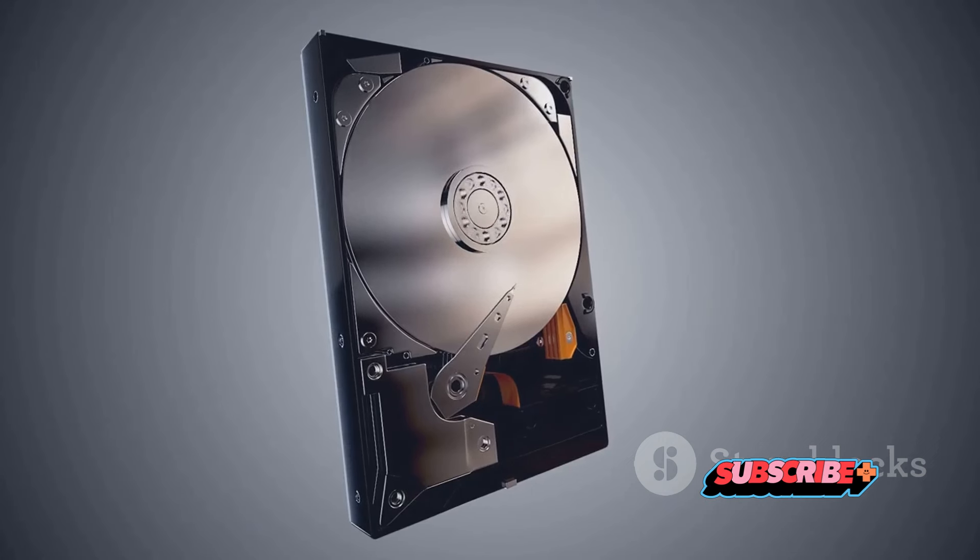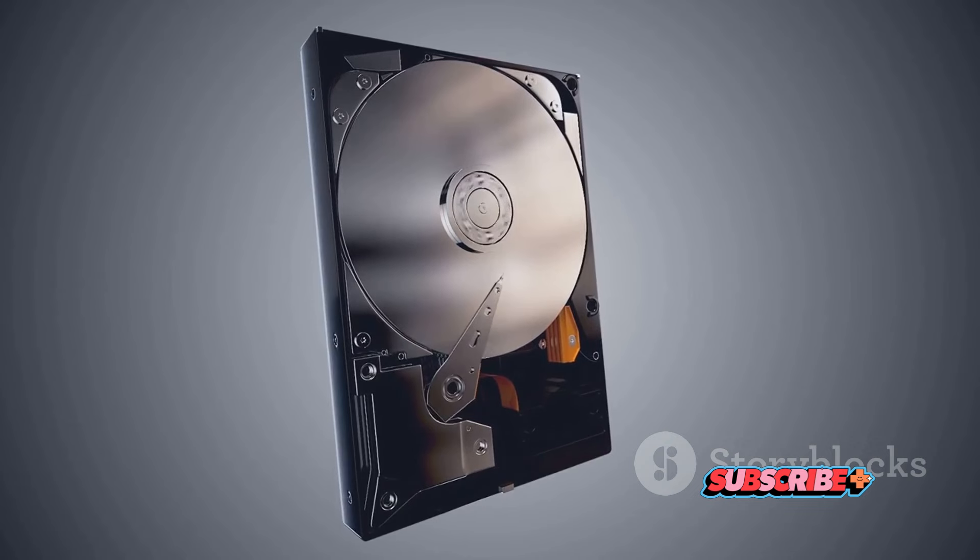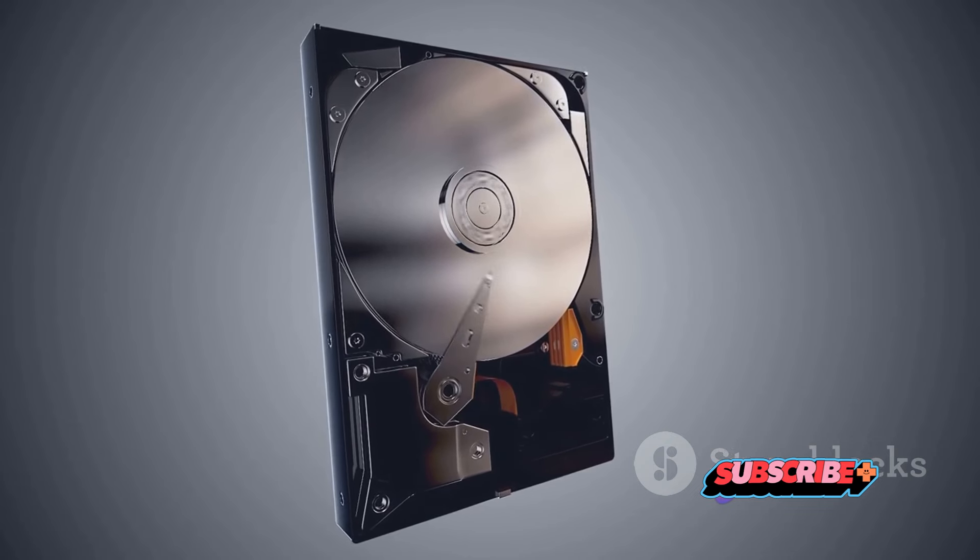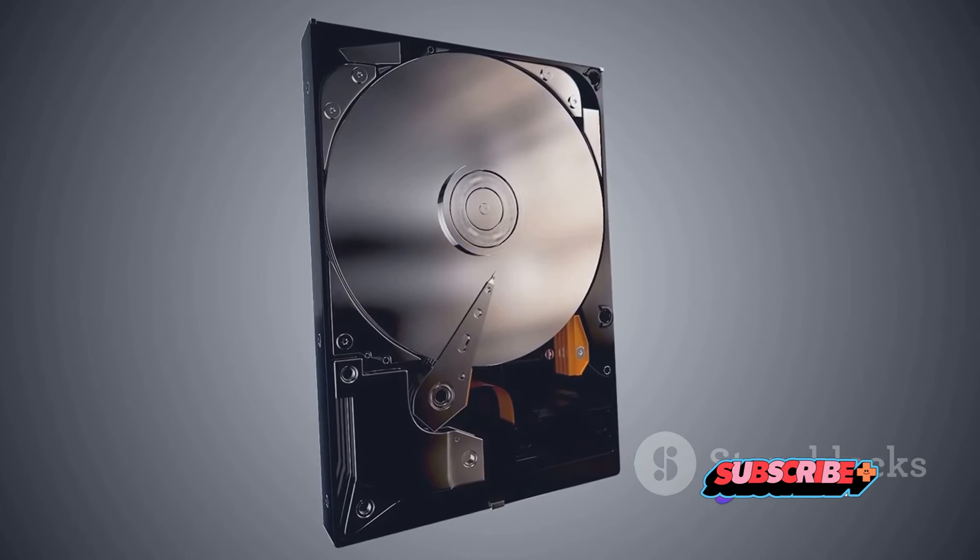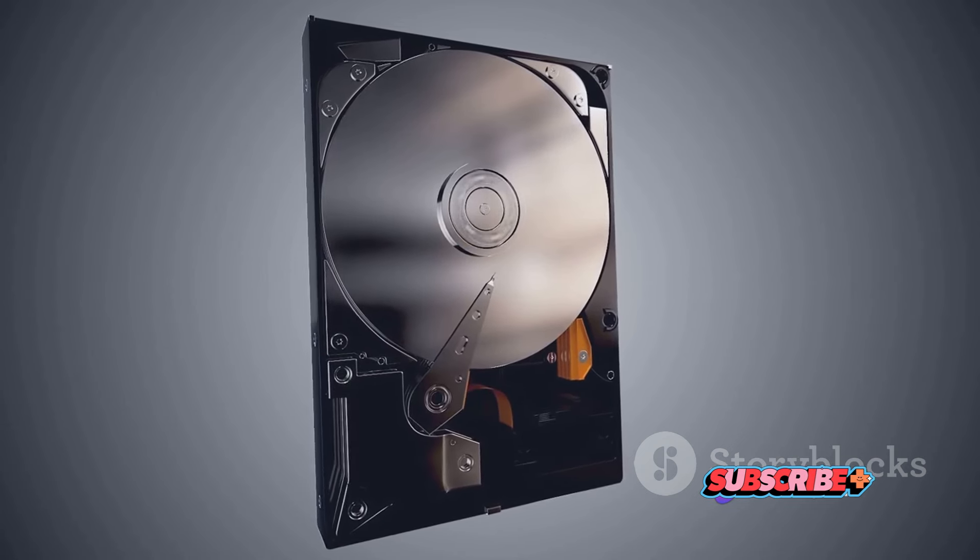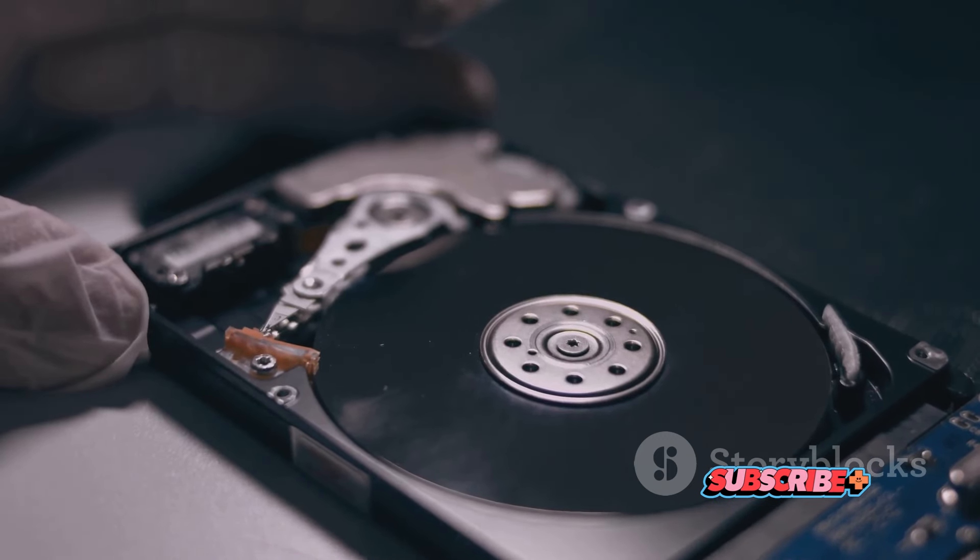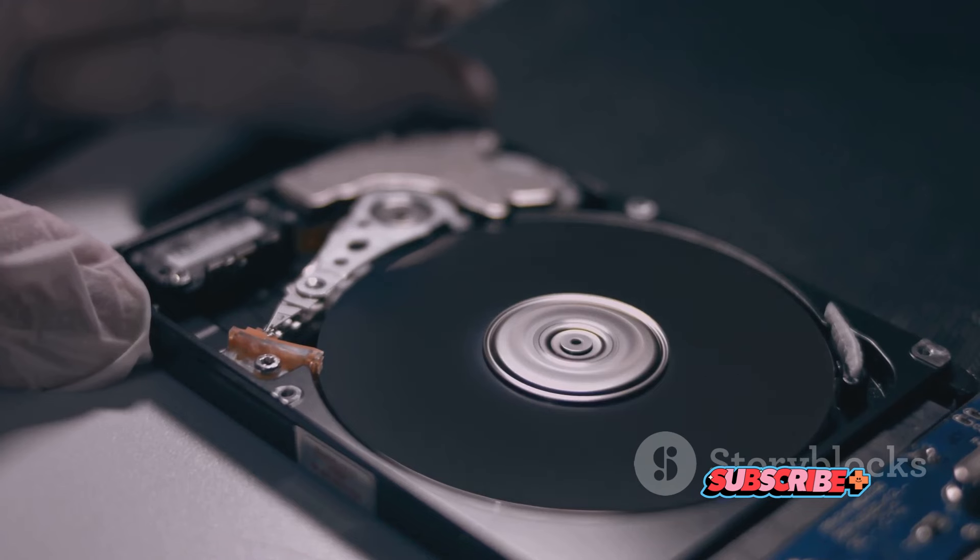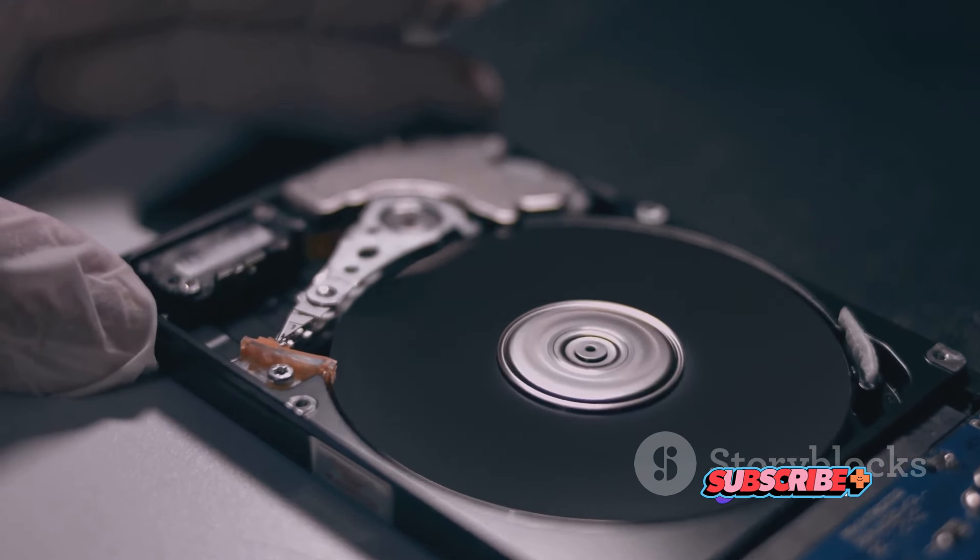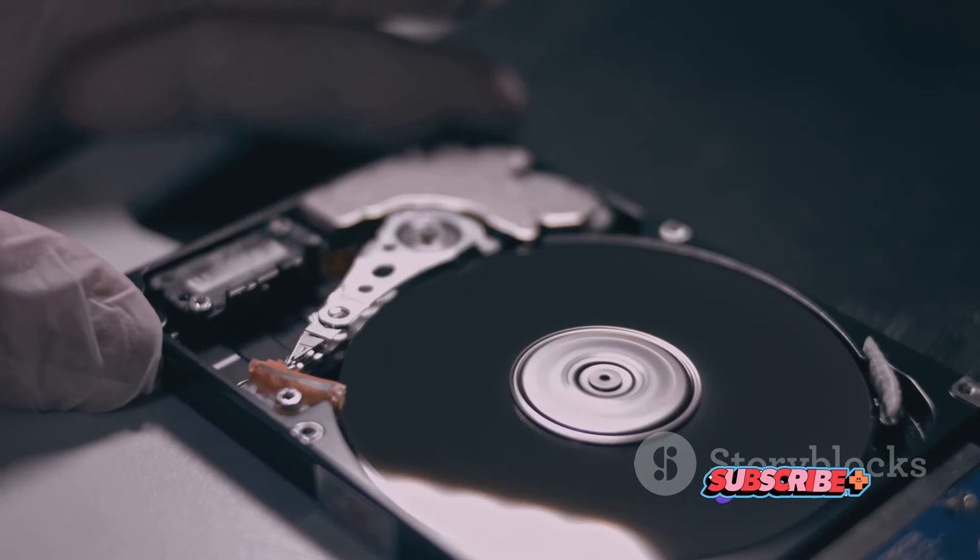Firstly, data storage. Without getting too technical, the hard drives in our computers use something called write heads. These are tiny electromagnets, essentially miniature coils that create magnetic fields. These fields change the orientation of magnetized particles on the disk, allowing data to be written and stored. So every time you save a document, upload a photo, or download a new app, you're putting coils to work.